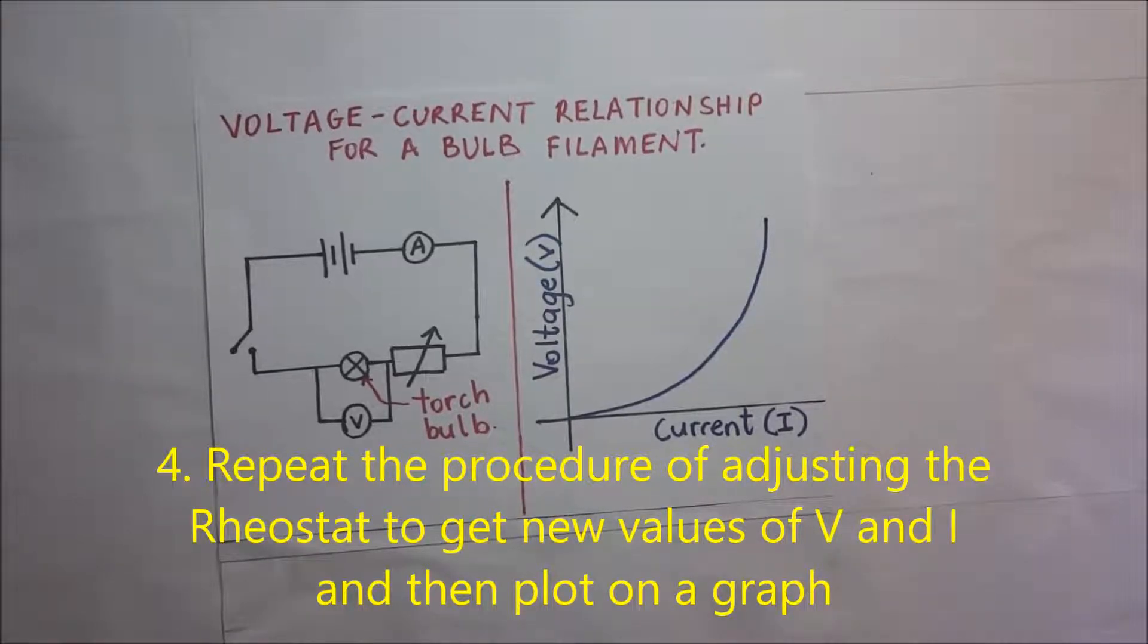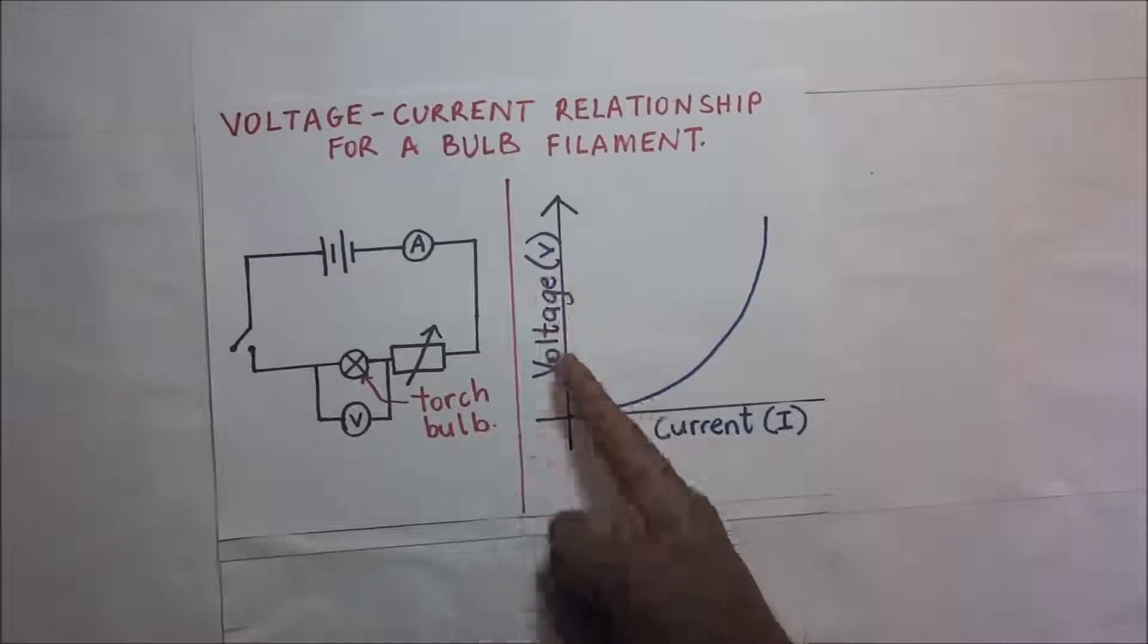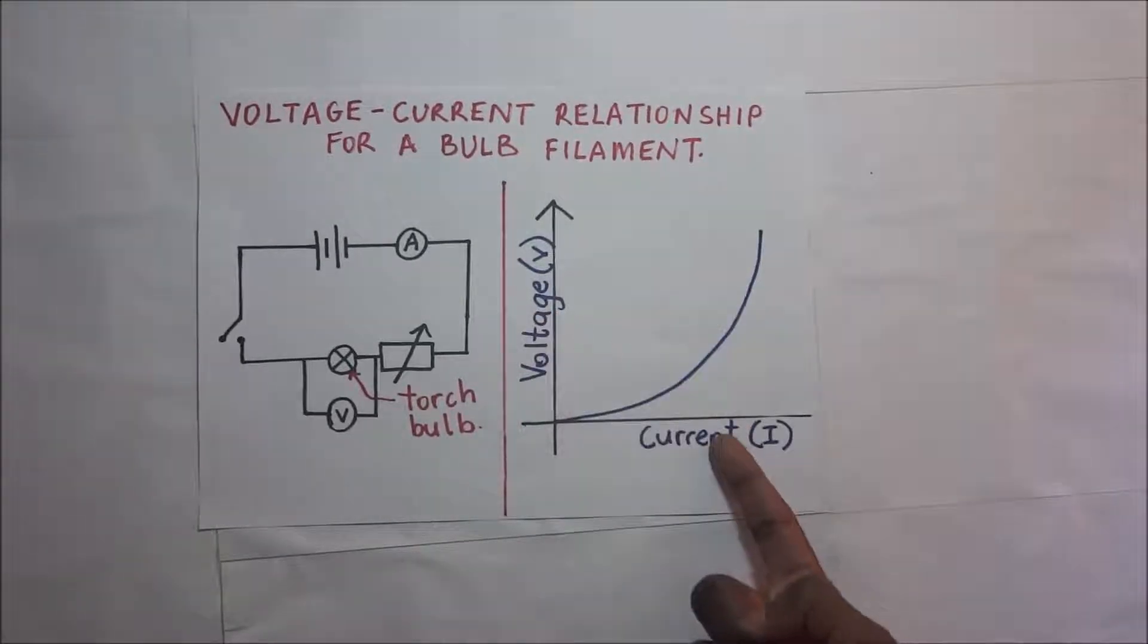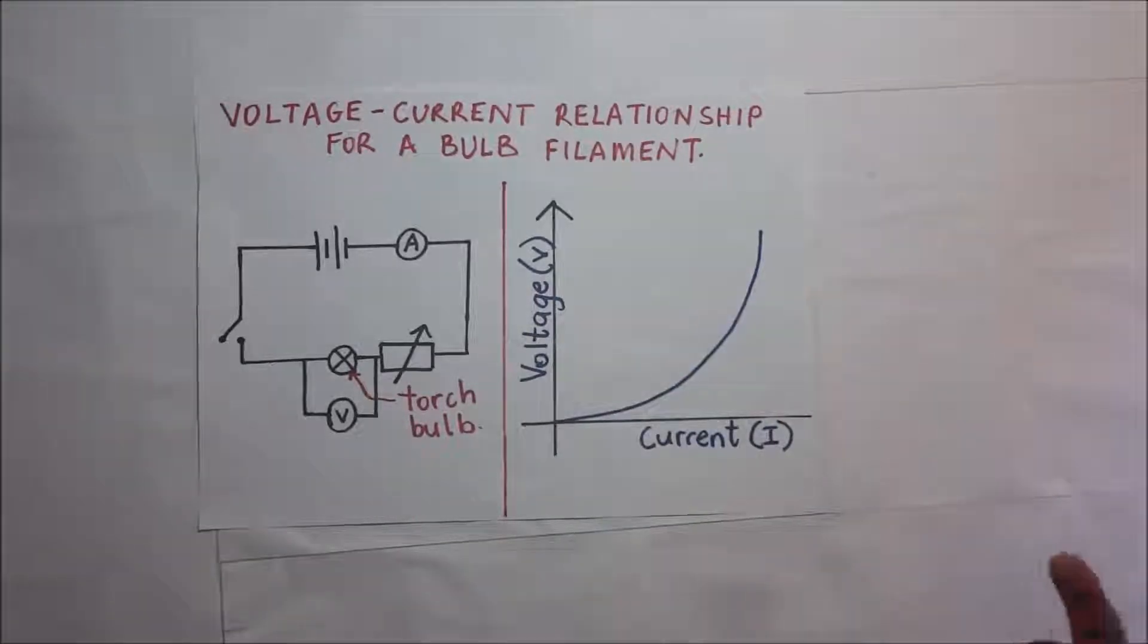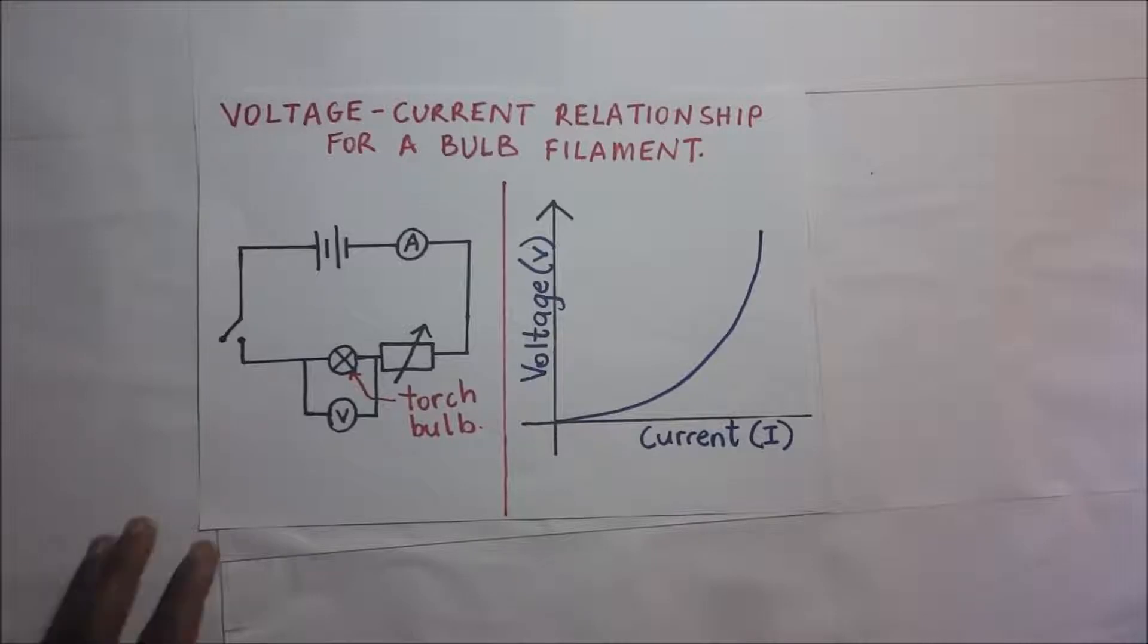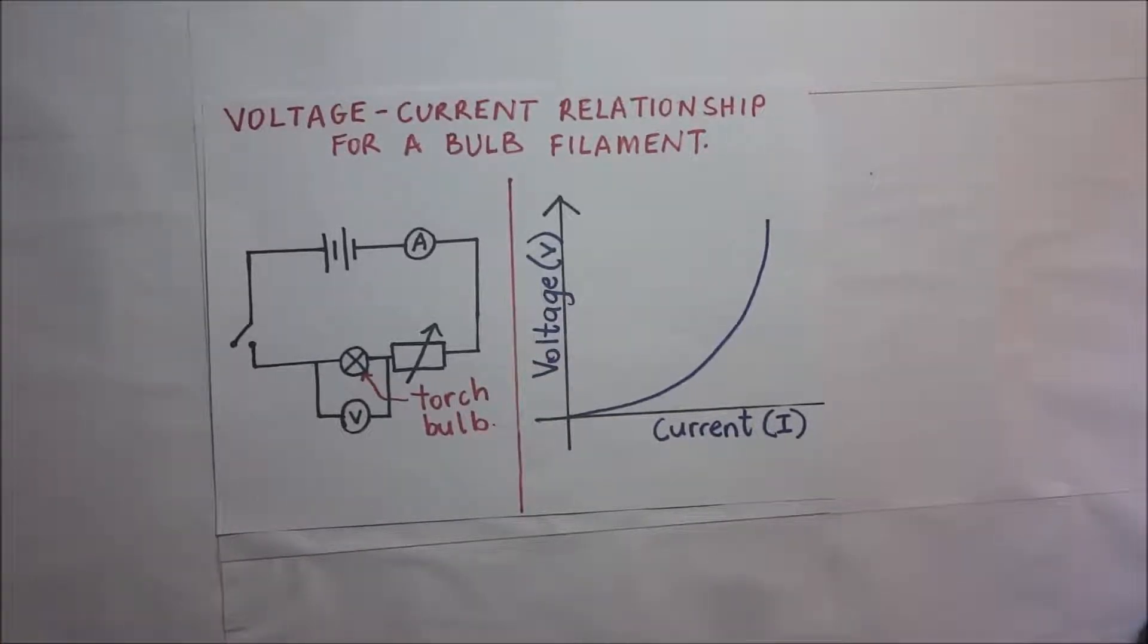And when we get our new values of voltage and current, we will go ahead and plot a graph of voltage against current. And when we plot the graph, we realize that the voltage-current relationship of a filament bulb is non-linear. This simply confirms to us that the filament in a bulb is a non-ohmic conductor.